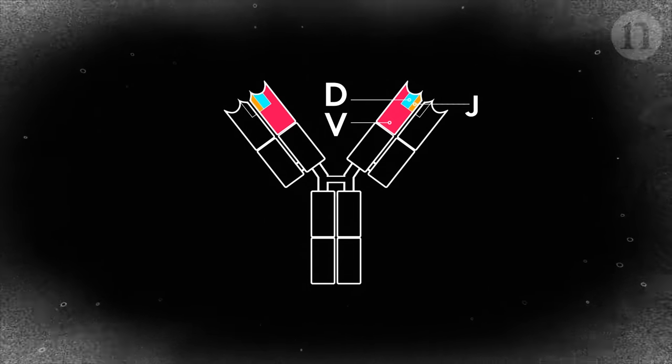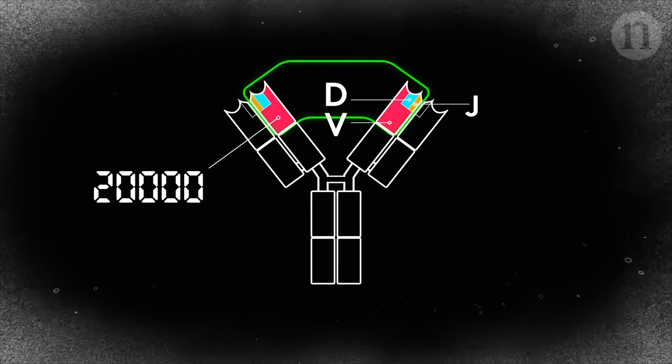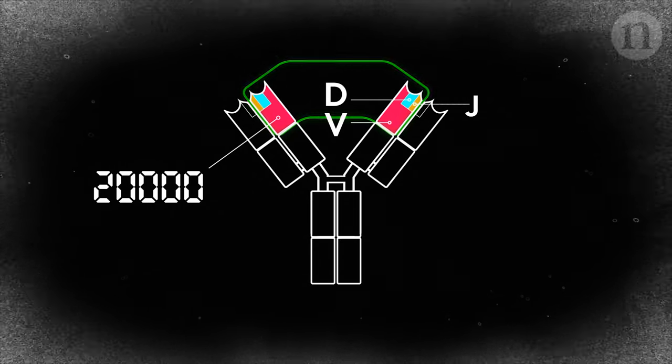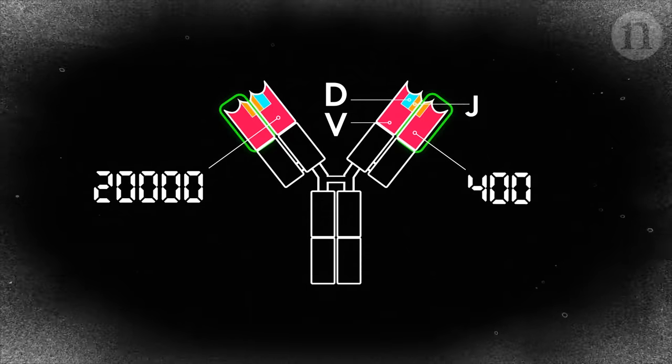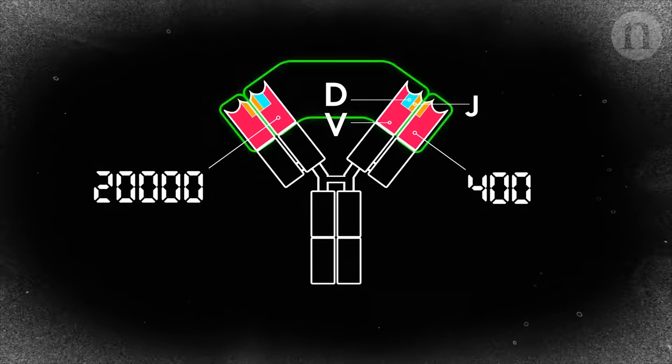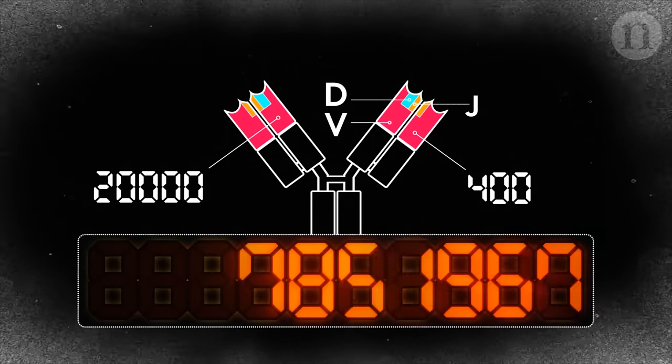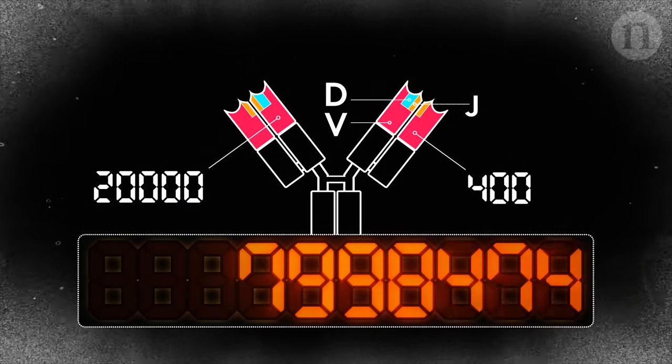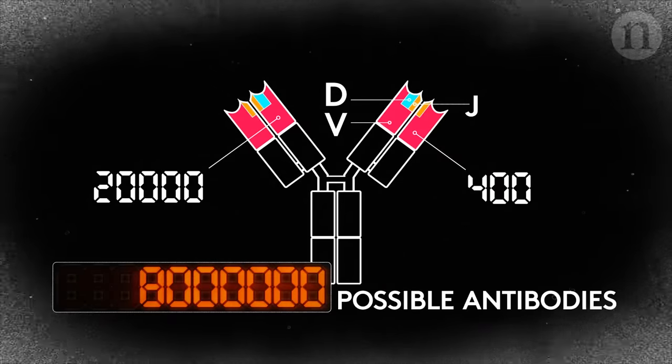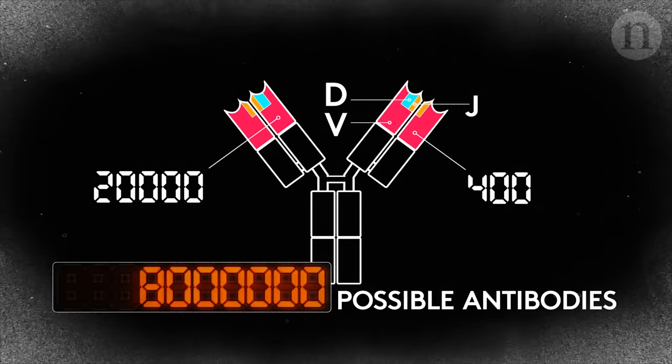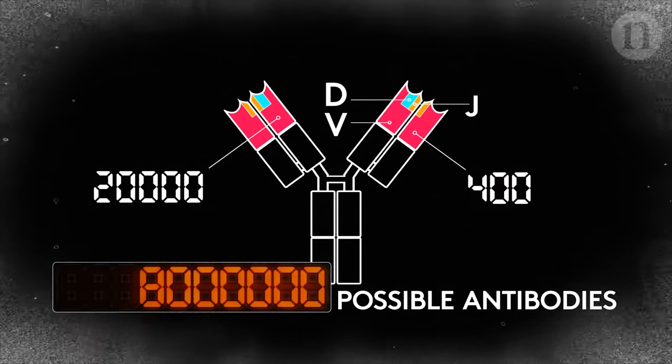This provides over 20,000 possible V-D-J combinations for the heavy chain. The light chain can have another 400 possible gene combinations. Combining heavy and light chains gives approximately 8 million different possible antibodies, each with a different binding site. And that's not all.